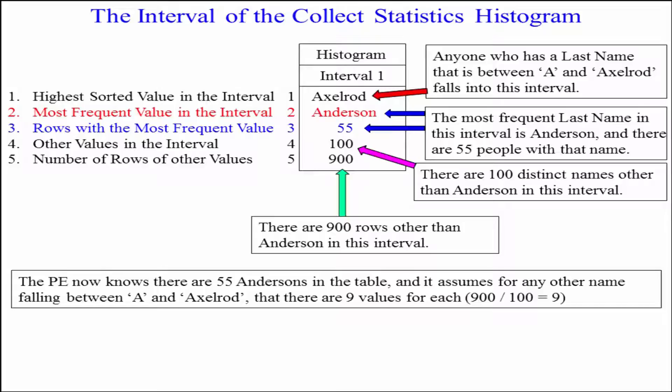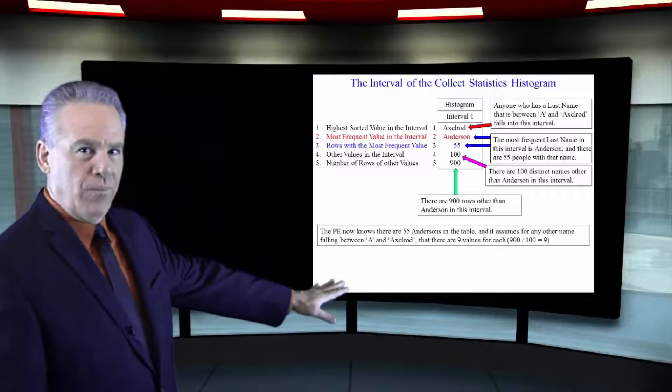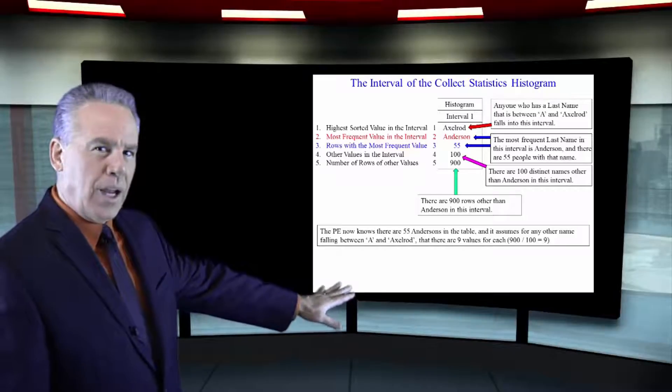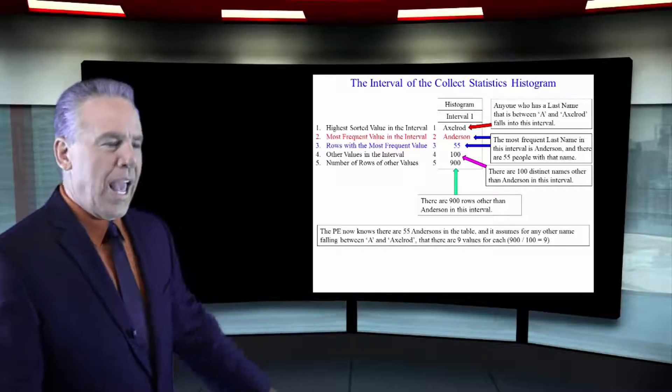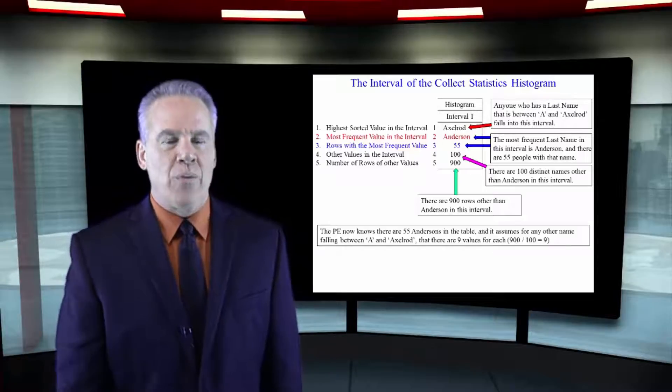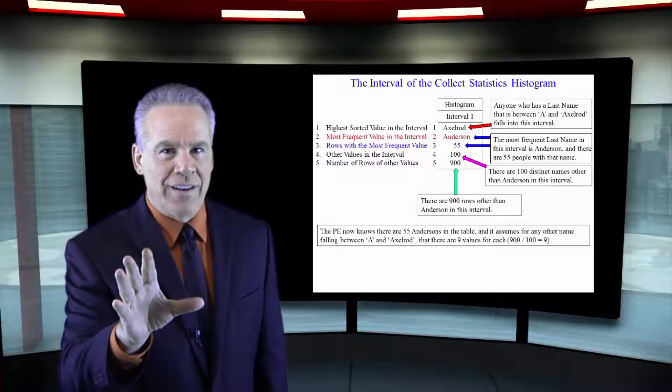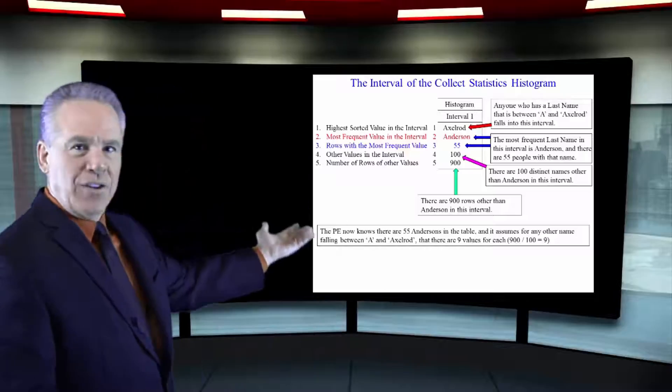There were 100 other names in this interval that were not named Anderson, and there were 900 other rows that were not named Anderson. That's all that's in an interval.